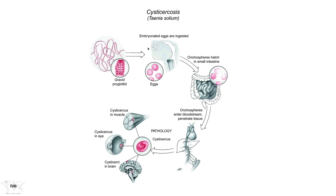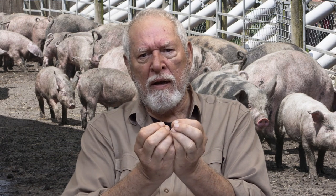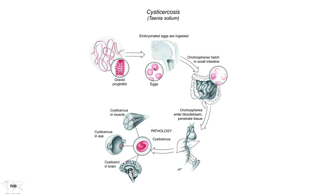Here's the story of how Taenia solium infection can manifest in a much more serious way than Taenia saginata. Both adult tapeworms cause virtually no pathology. The eggs of Taenia solium respond to environmental cues in the pig's small intestine — which is how pigs acquire this stage — and also from humans, since the physiology of human and pig digestive tracts is quite similar. If humans ingest the egg of Taenia solium, it traverses the esophagus, enters the small intestine, and is stimulated to hatch. The hexacanth larvae then penetrate the wall of the small intestine and enter the blood supply.